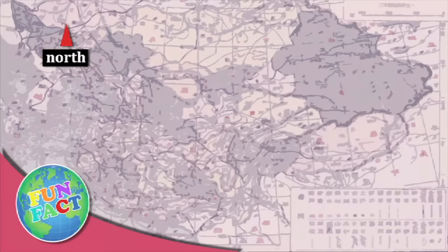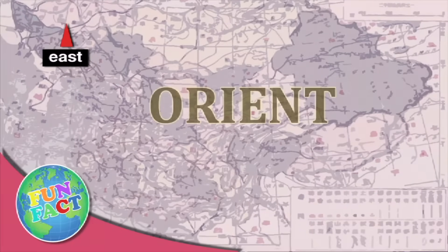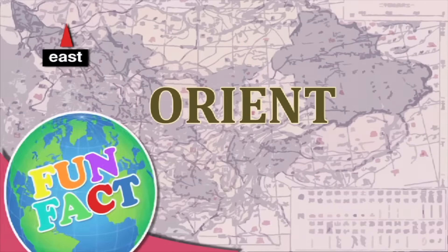Most maps today are drawn with the north side up, but in medieval Europe they were usually drawn with east facing up. East was toward Asia, which they called the Orient. That's why when someone is trying to figure out which way they are facing, they say they are orienting themselves.